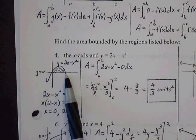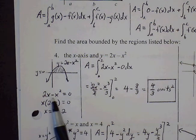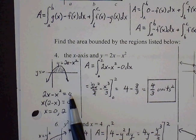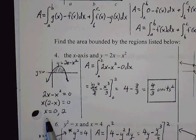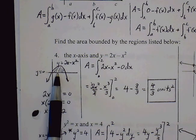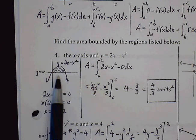So the intersections, the way we find that is we set the curve equal to each other. So 2x minus x squared being the curve, set equal to the other line, which is y equals 0. Factor out the x, solve for x, we get 0 and 2. So we know that our left bound is 0 and our right bound is 2. And this is in the form of top minus bottom. So our top curve will be 2x minus x squared and our bottom graph will be 0.